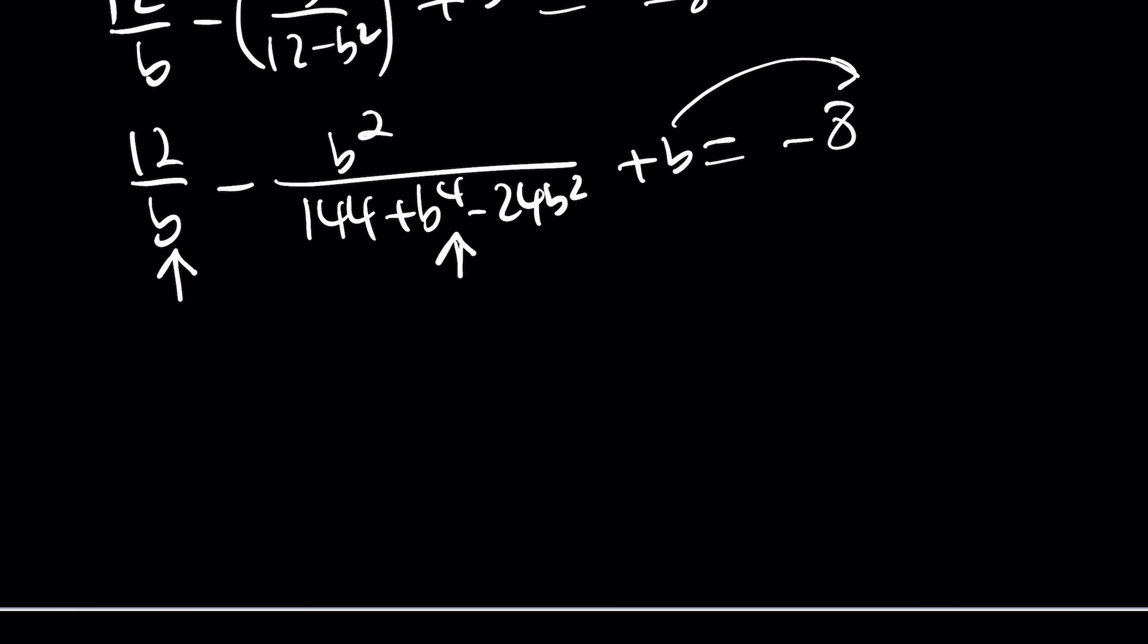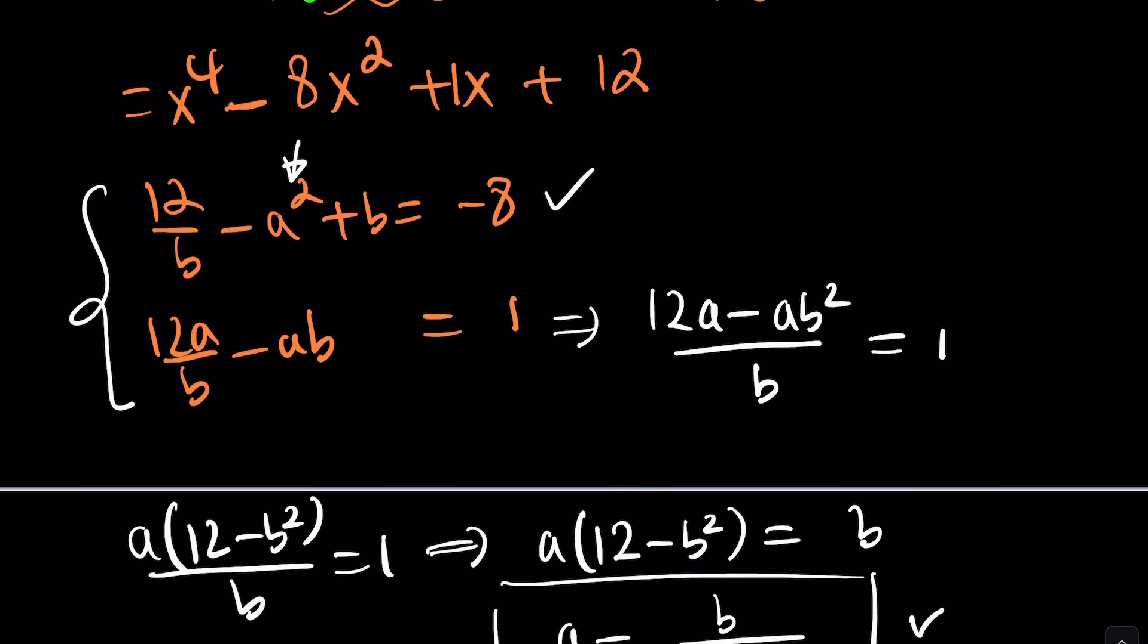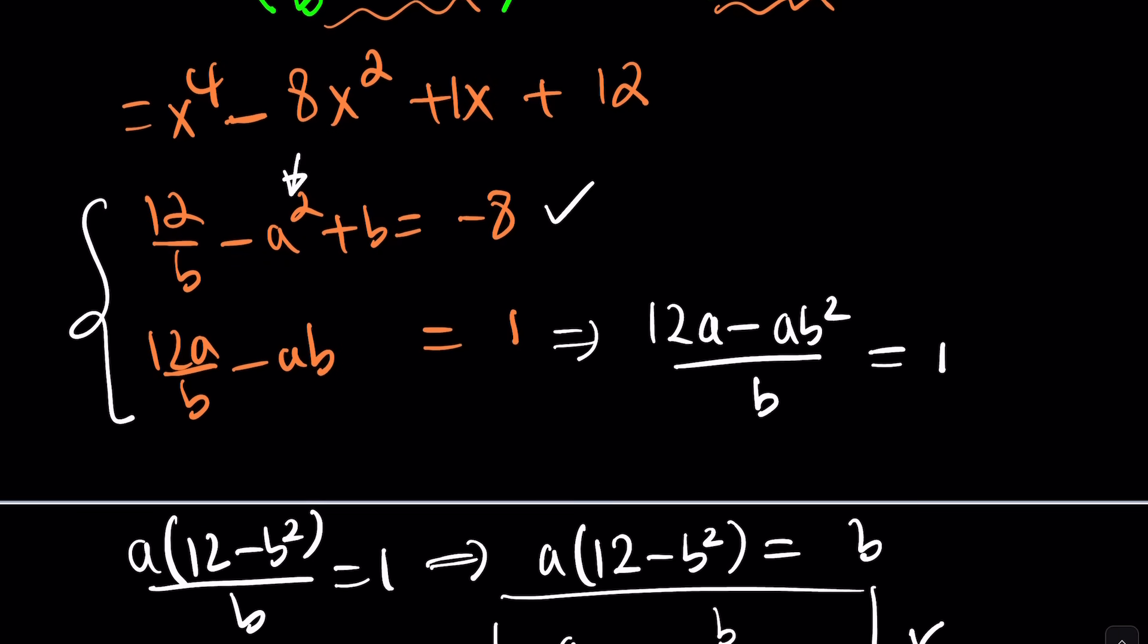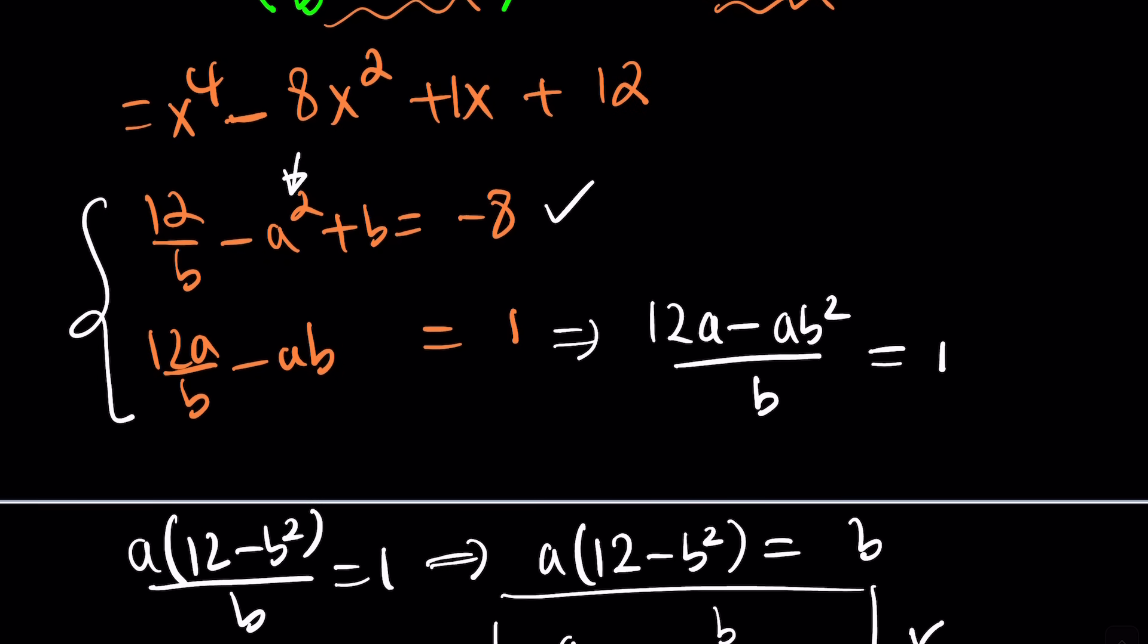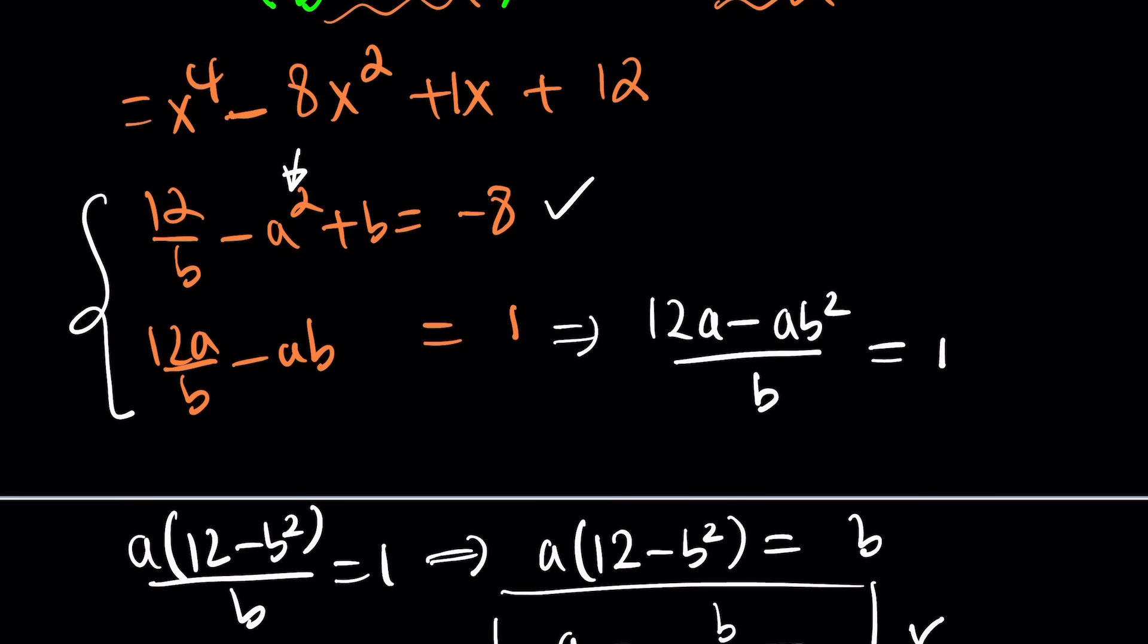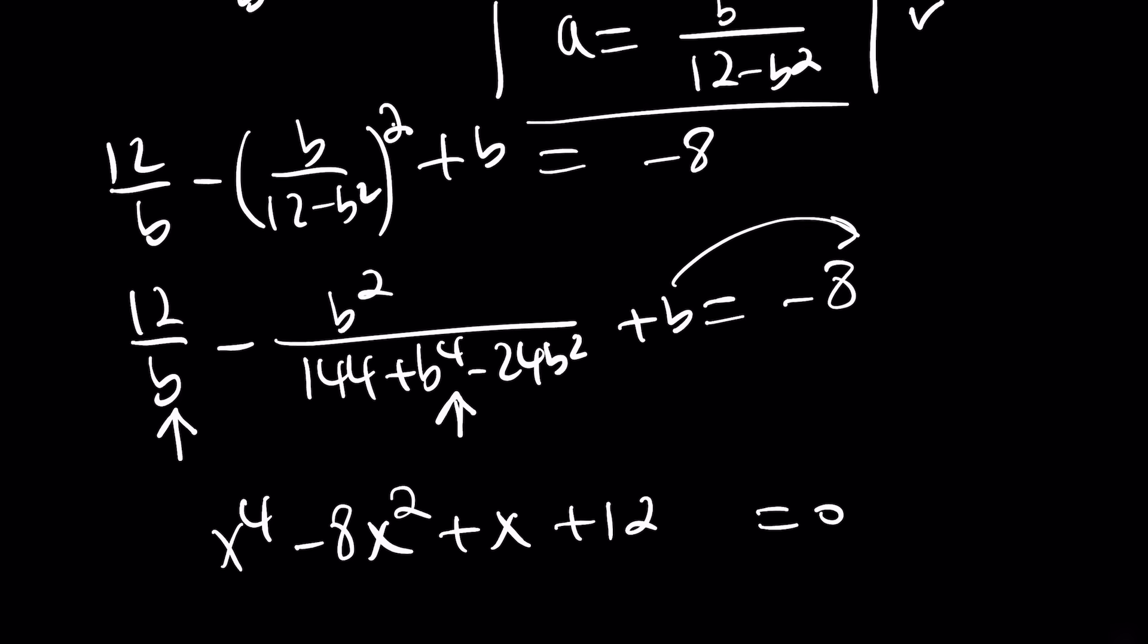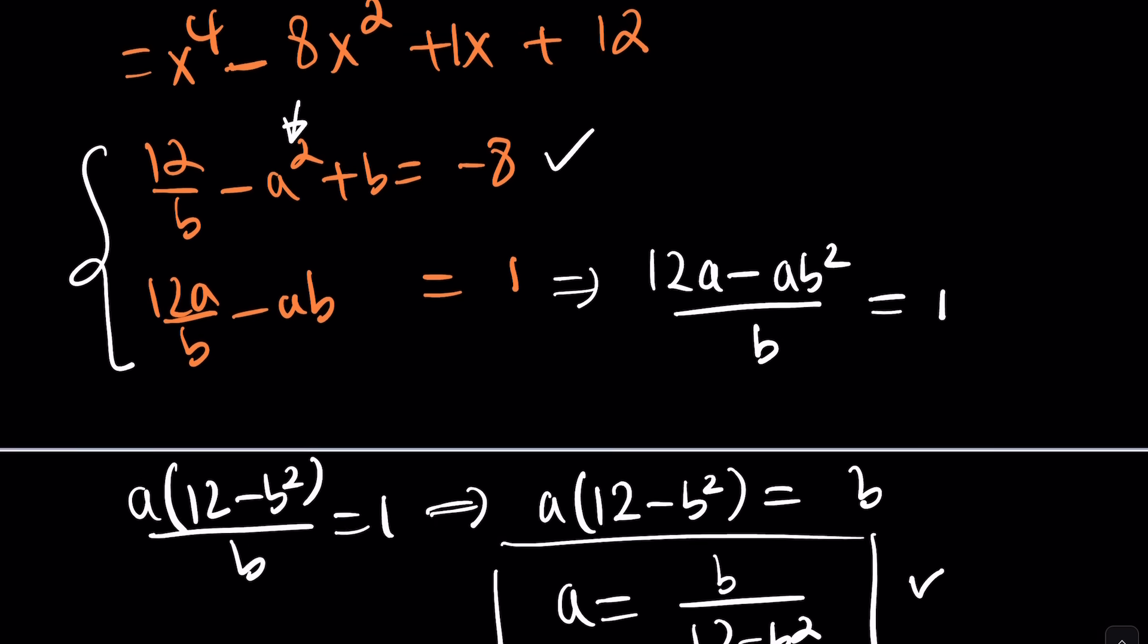Uh-oh. We ended up with a quintic. I don't know why, but this is very problematic. Because there is no quintic formula. So, what should we do instead? I think we should do something else. Another method could be something like this.